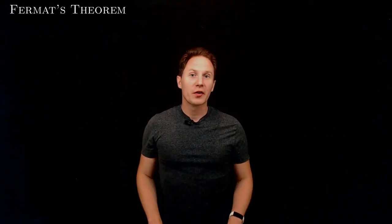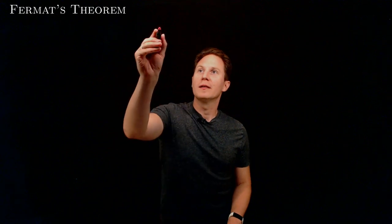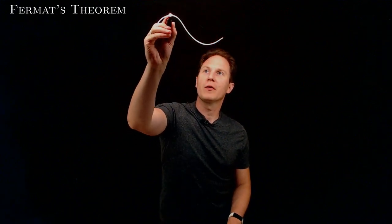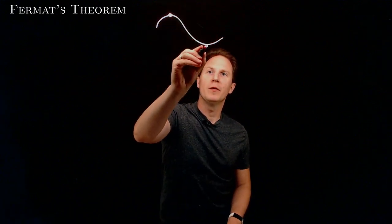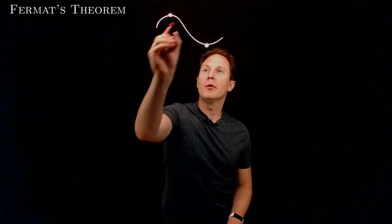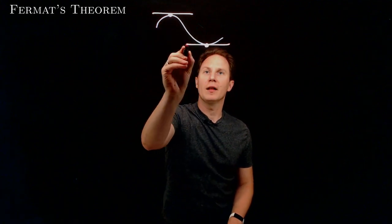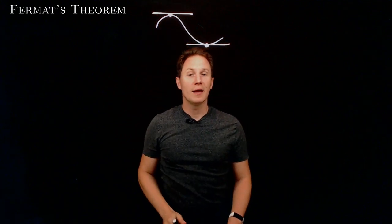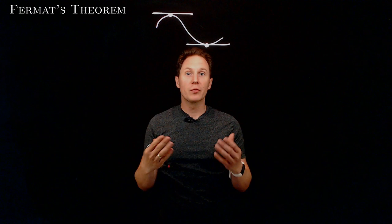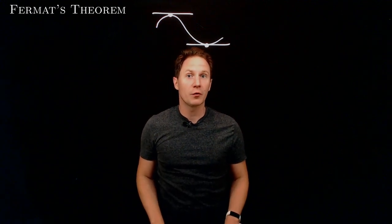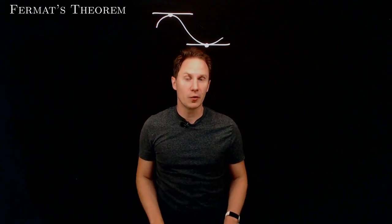Fermat's theorem confirms our intuition that if we have a function that attains maximum and minimum values at points where the tangent line is well-defined, then the slopes of those tangent lines at those points — the derivative of the function at those points — must be zero.